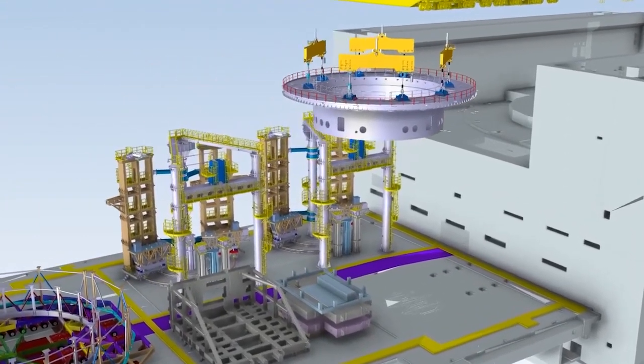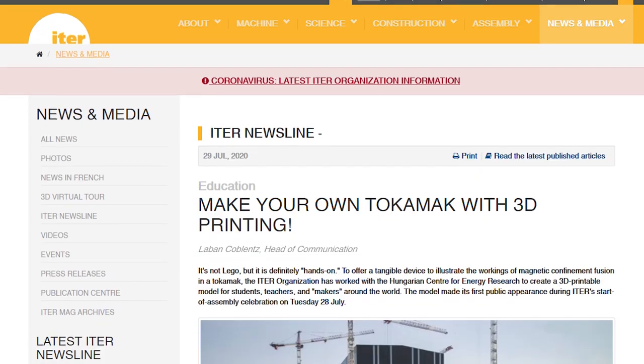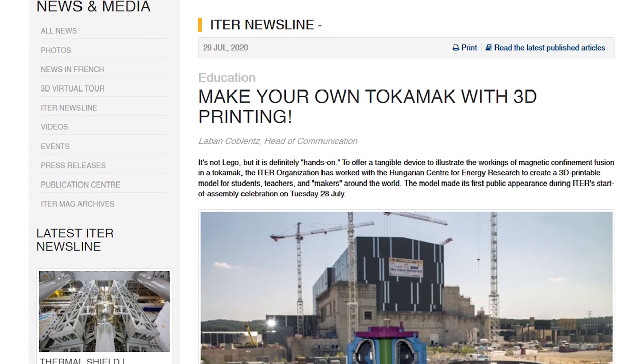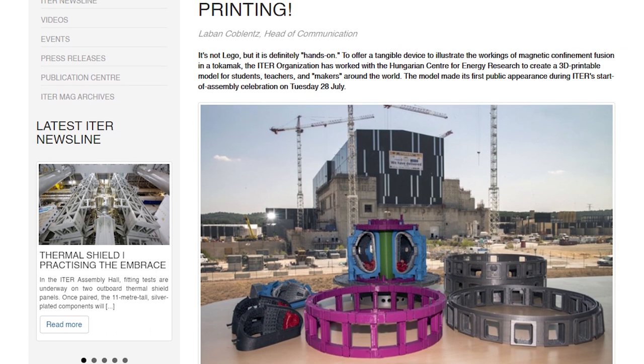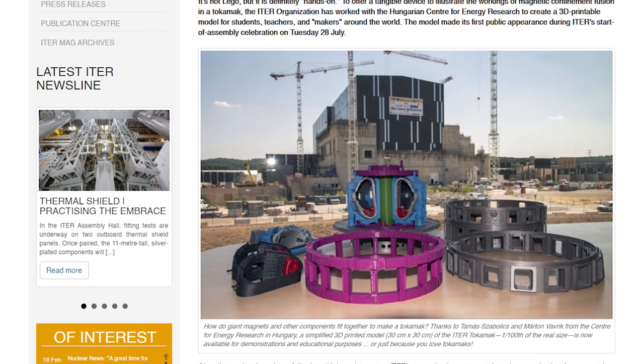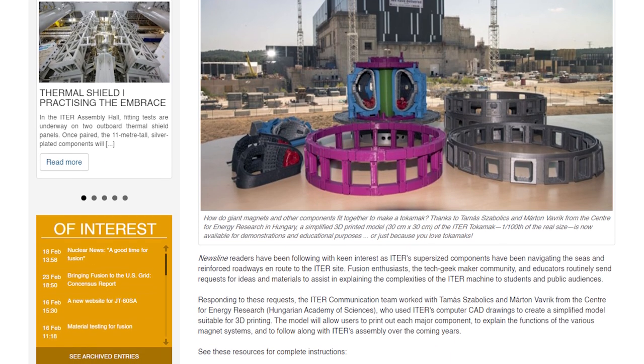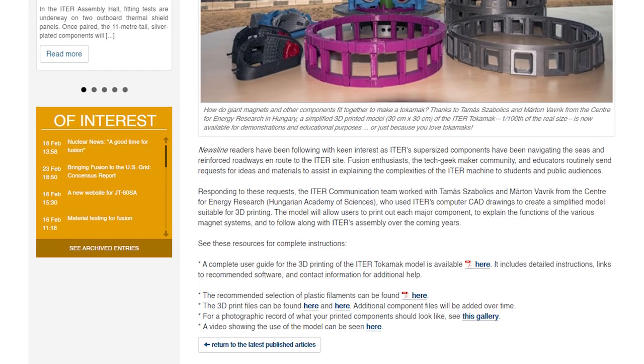Quick fact, you can actually 3D print your own model of a Tokamak. Just click on the link at www.iter.org slash newsline slash minus slash 3477. You can visit the page to find the links for how to construct it. Warning, models do not actually produce fusion energy.